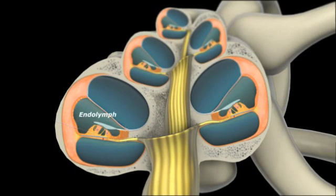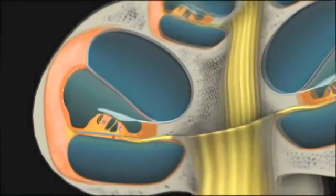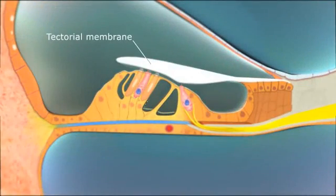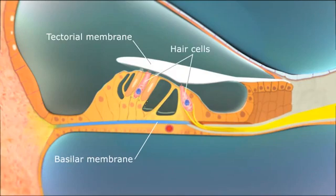The scala media is filled with endolymph. The scala media includes structures from the tectorial membrane, basilar membrane, and hair cells, which sense the mechanical forces.